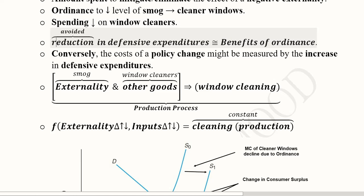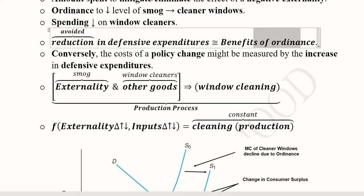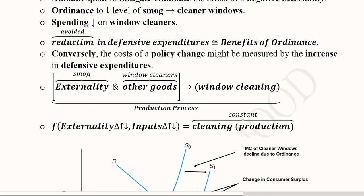So the reduction in this defensive expenditure can be considered equivalent to the benefits of this ordinance. This is a very simple way of quantifying and assessing the benefits of such ordinance.